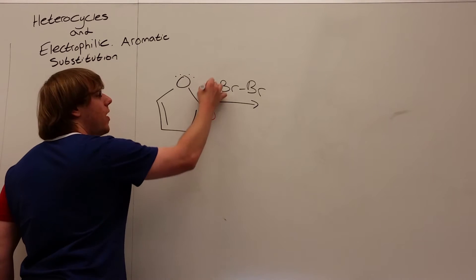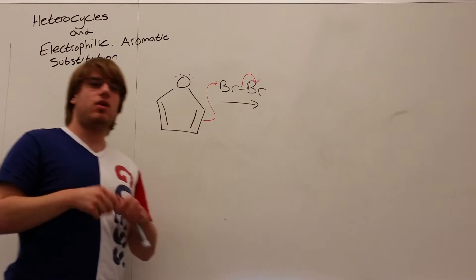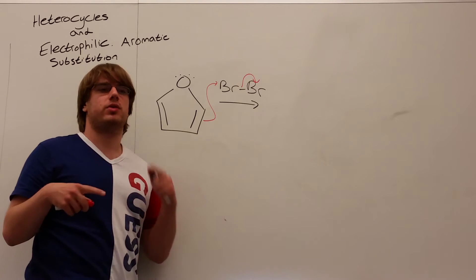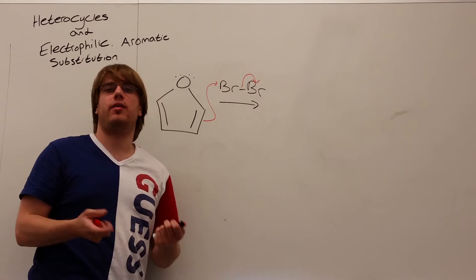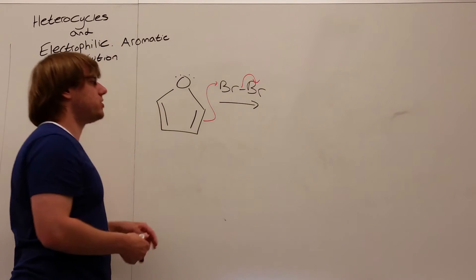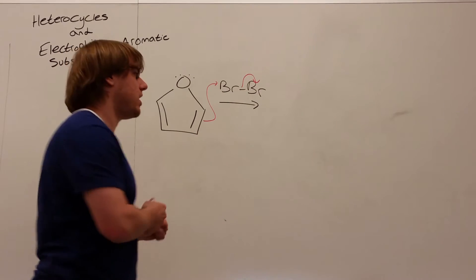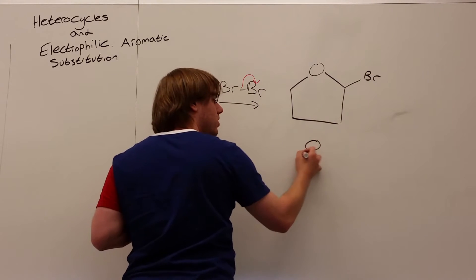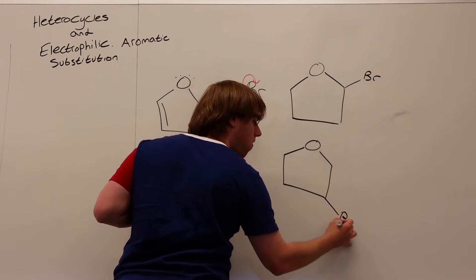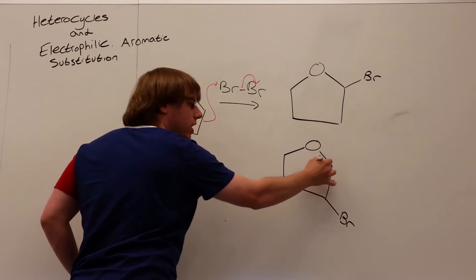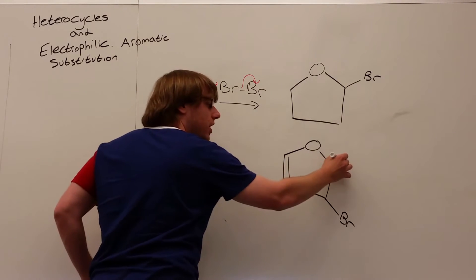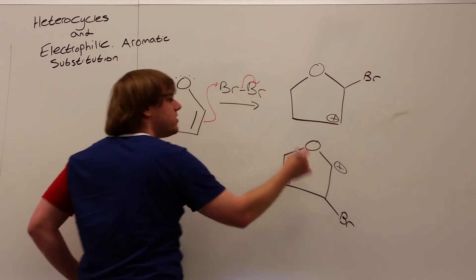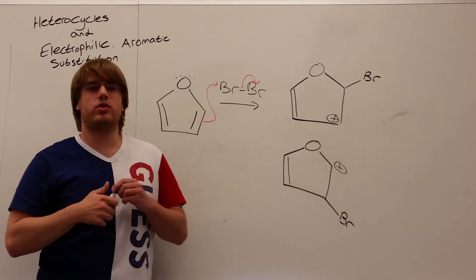This double bond can go out and grab the bromine and kick the other bromine out. In the case of benzene with no directing group, it didn't matter where the bromine ended up. But in heterocycles there will always be a directing group — that's what a heterocycle is, a ring with more than just carbon in it. In this case it's the oxygen. Let's consider both possibilities: adding the bromine on the top carbon versus the bottom carbon, and the corresponding carbocation we could get in each case.